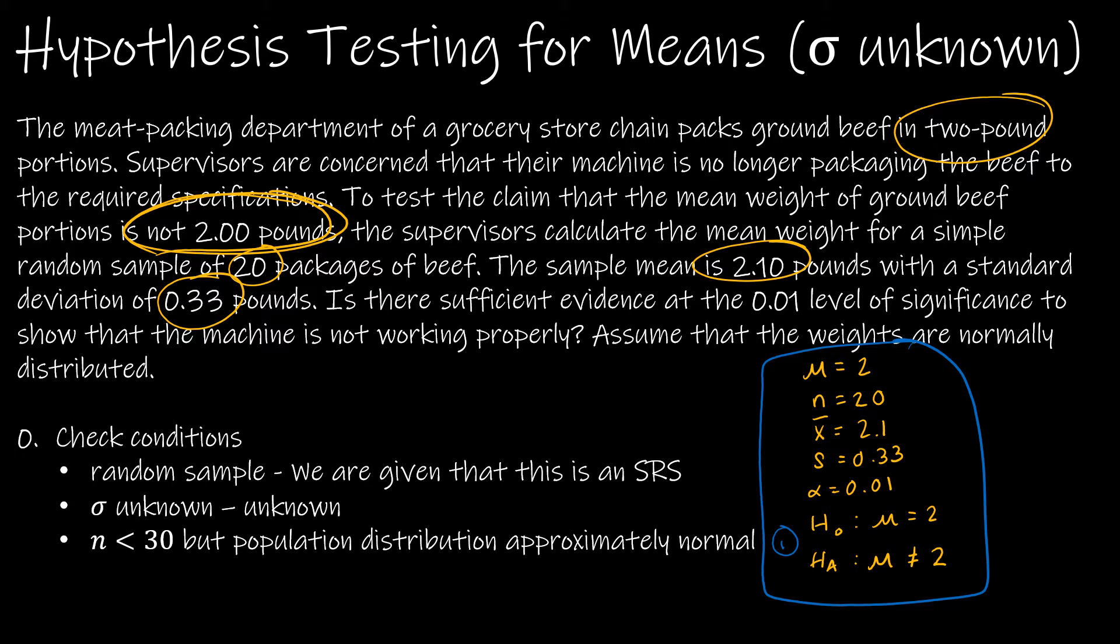And sigma is unknown. That's correct. And although n is less than 30 because n is 20, we are told that the weights are normally distributed, so conditions are met.